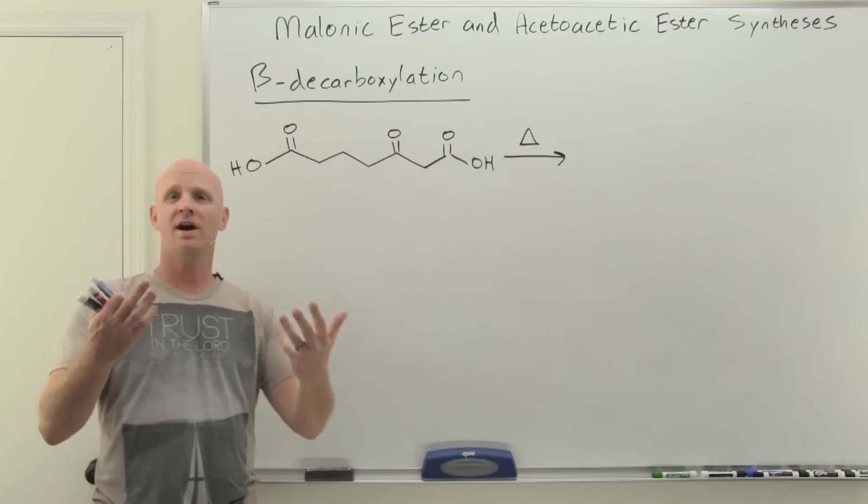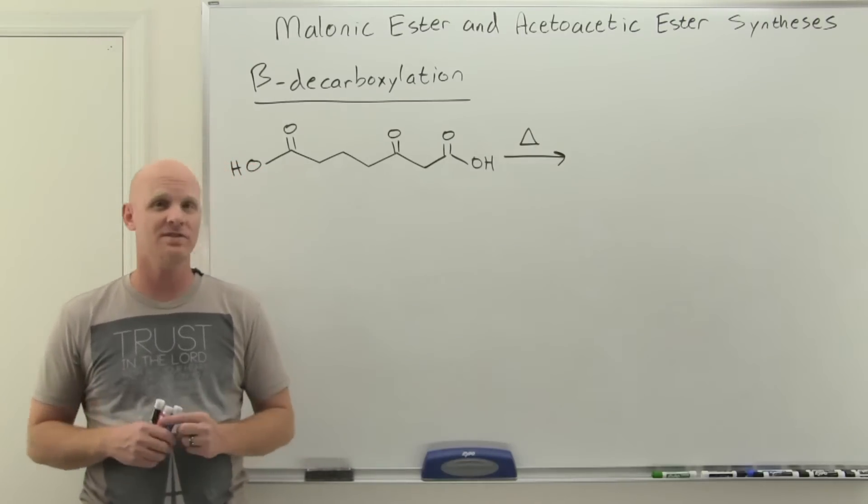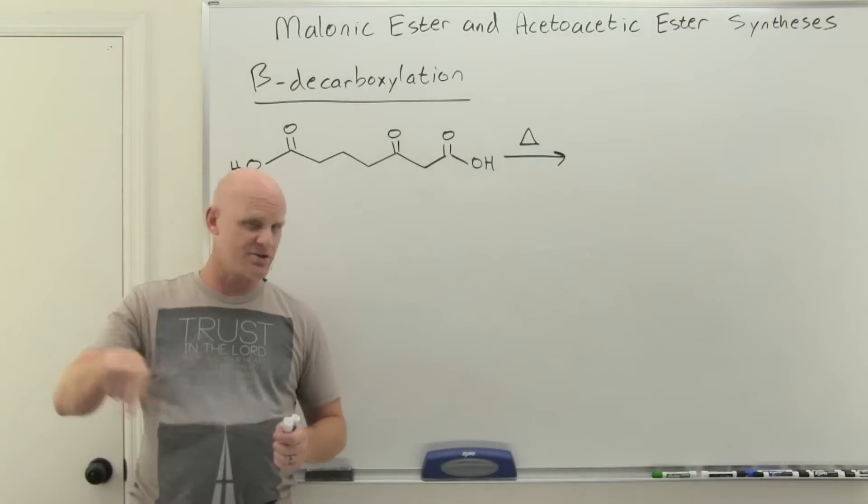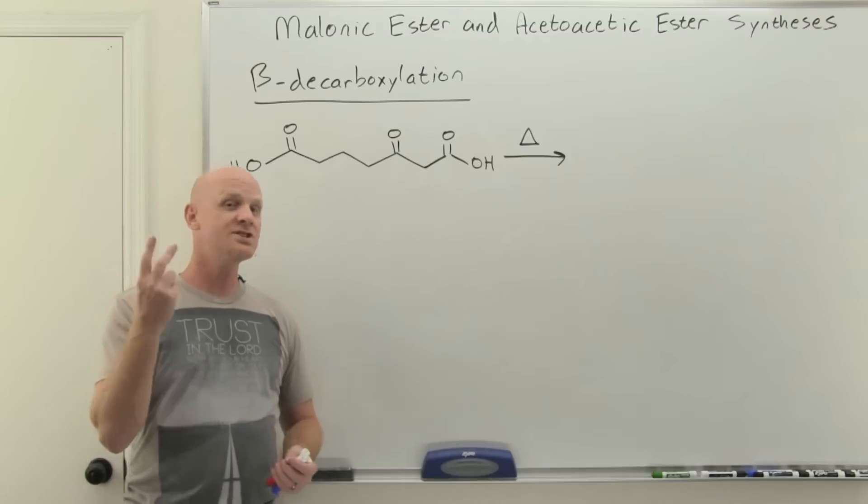When you exhale carbon dioxide, some of that carbon dioxide is produced in the citric acid cycle. If you recall, for every time you do that citric acid cycle which you learned about in biology or biochemistry, you lose two CO2 molecules.